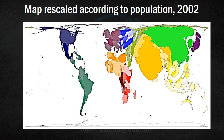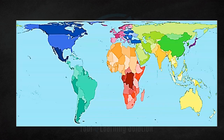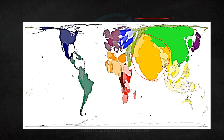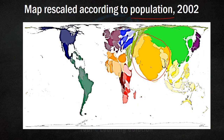If we look at this map which has been rescaled according to population size in 2002, we see that the size of some countries or continents is actually very large compared to their actual geographical size. If we especially look at India, we know that as a proportion of the entire world area, India does not have such a large area. But if we rescale or show this map according to population size, we can see how large India is. In terms of geographical area, India is only a small size, but in terms of population, it occupies a large area in terms of the world population.